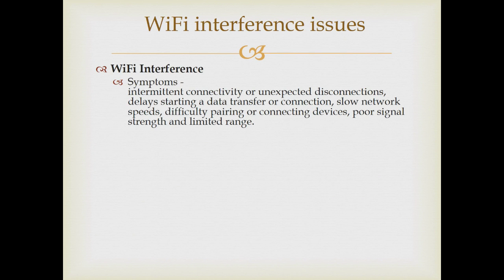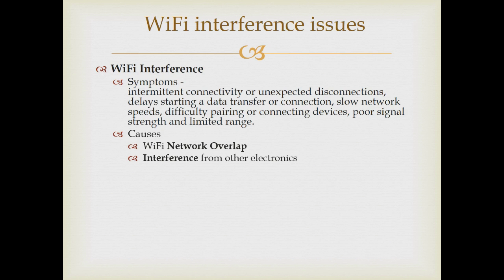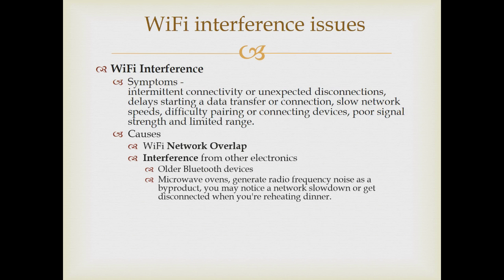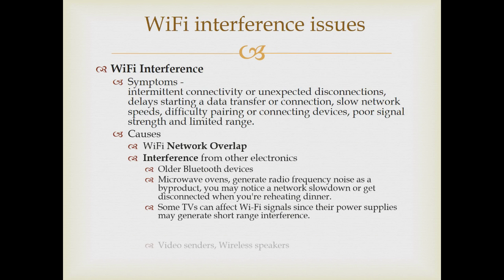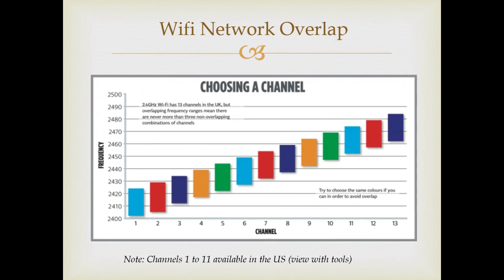Next, we'll talk about Wi-Fi interference — what are the symptoms and what are some of the causes? Interference symptoms include intermittent connectivity, unexpected disconnections, delays starting a data transfer, slow network speeds, difficulty pairing or connecting devices, poor signal strength, and limited range. Causes for these symptoms include Wi-Fi network overlaps, interference from other electronic devices such as older Bluetooth devices, microwave ovens, TVs, or other Wi-Fi devices that can generate short-range interference. Another big cause of interference is physical obstructions, which can be anything from a metal building to trees and rain or fog.